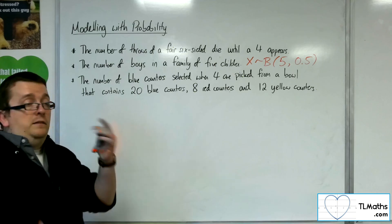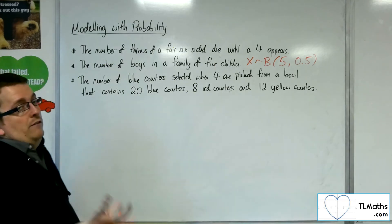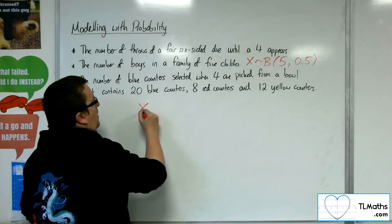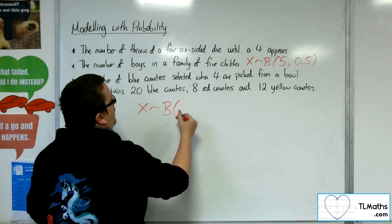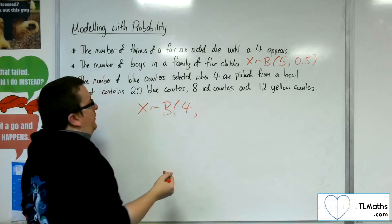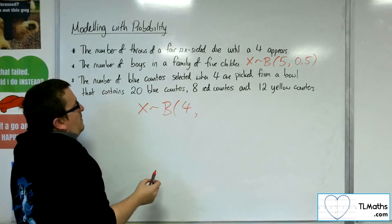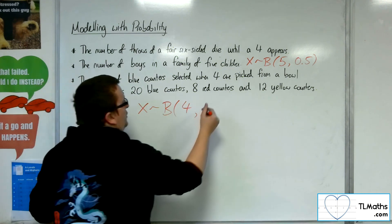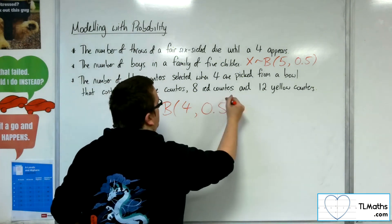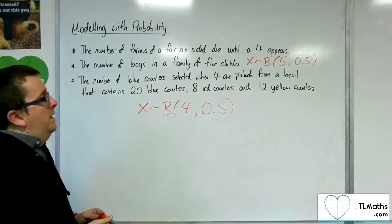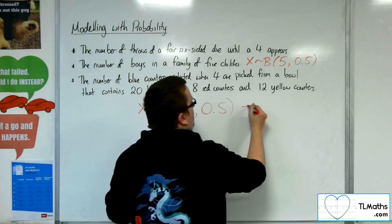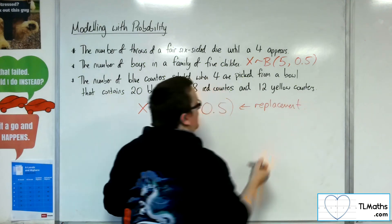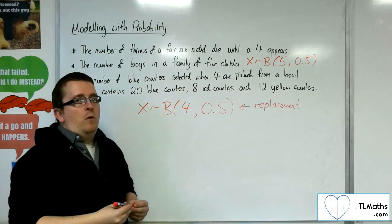So assuming that we have replacement, then we would be looking at a binomial distribution where we've got four trials. And the probability of success is 20 out of the total. So there's 20 out of 40, so it would be 0.5 again. That is based on the fact that there is replacement. If there's no replacement, then it won't work.